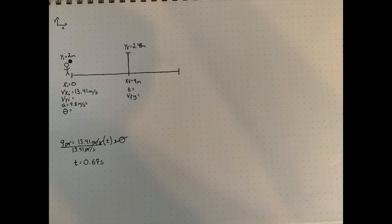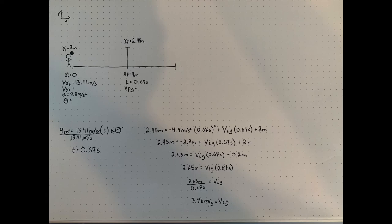With that we can find our initial y velocity. The final y is 2.45 meters which is equal to negative half of gravity times 0.67 seconds squared plus initial velocity times 0.67 seconds plus initial y of 2 meters. This gives us an initial y velocity of 3.96 meters per second.